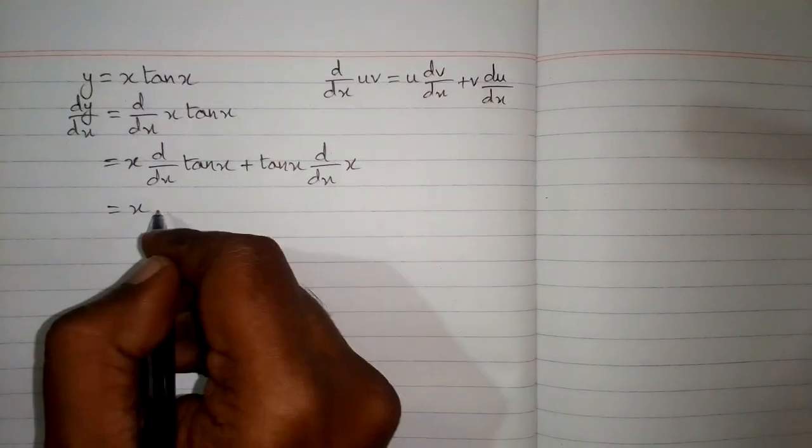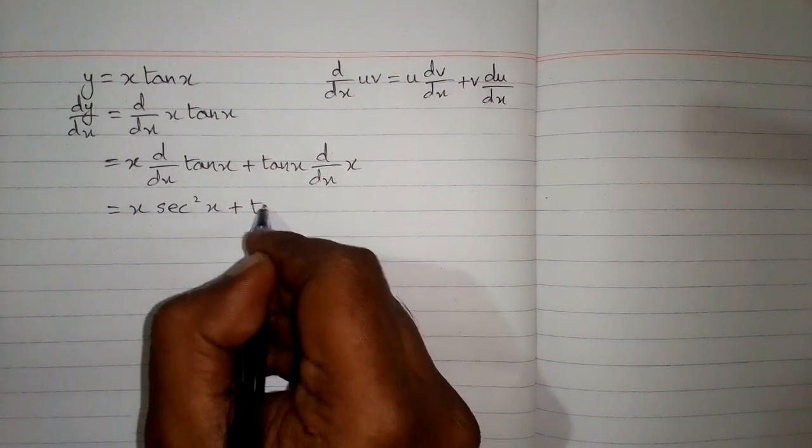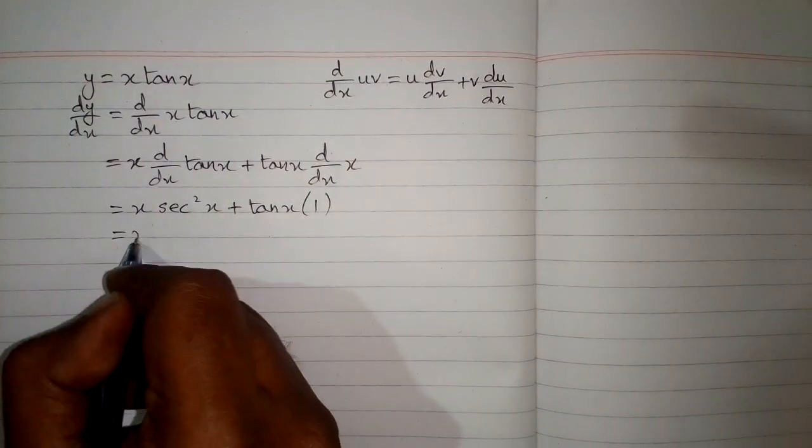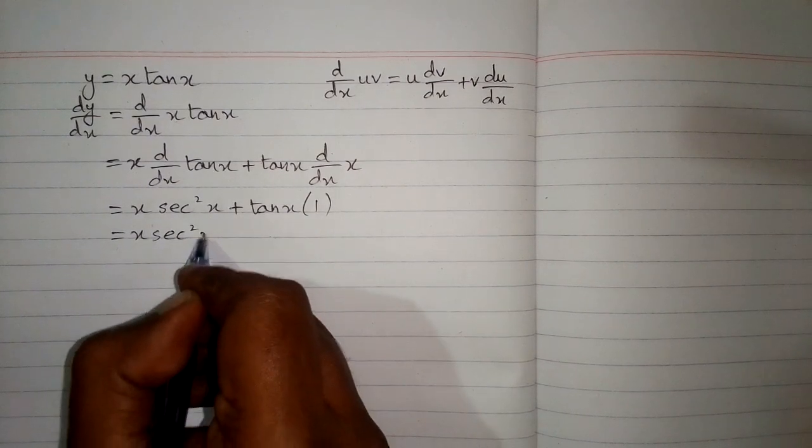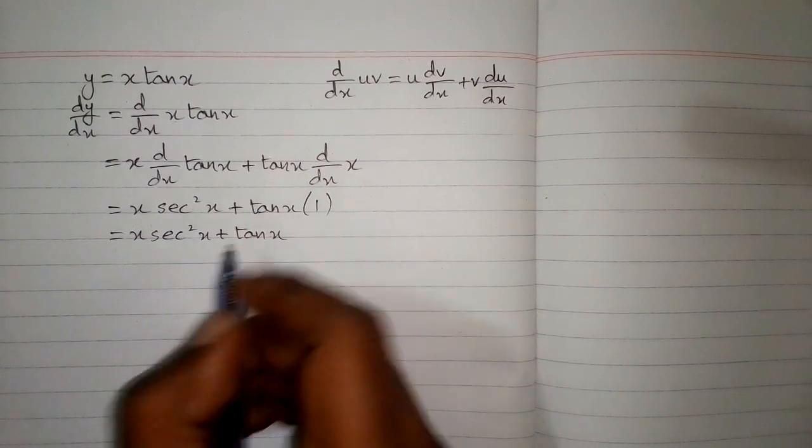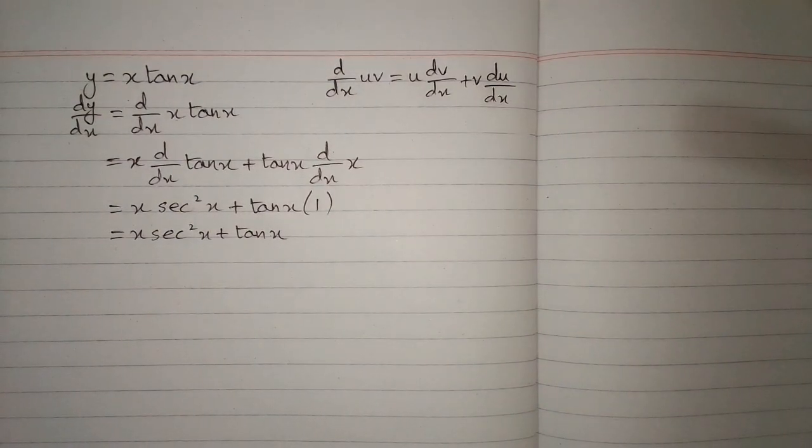The derivative of tangent of x is sec squared x and the derivative of x is 1. So we have x times sec squared x plus tan x multiplied by 1, which is tan x. Therefore, the derivative of x times tan x is x sec squared x plus tan x.